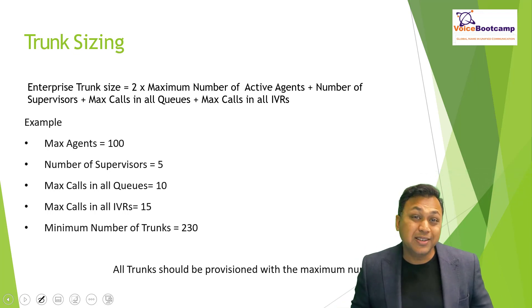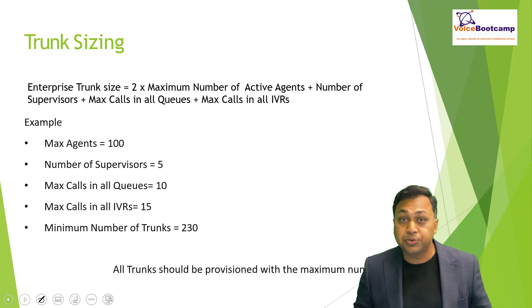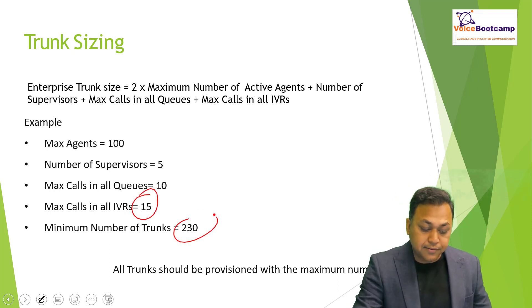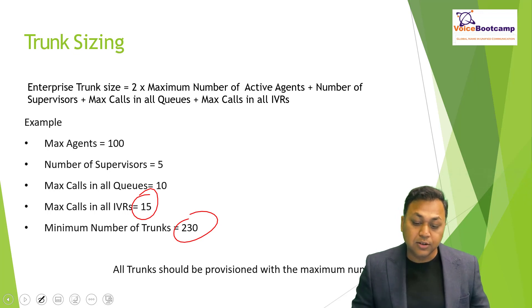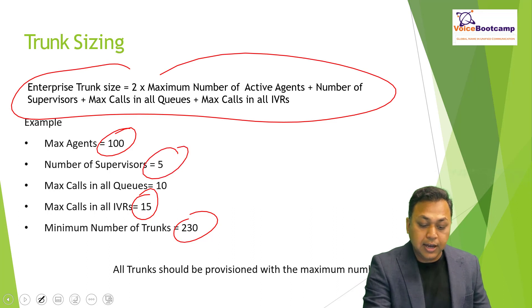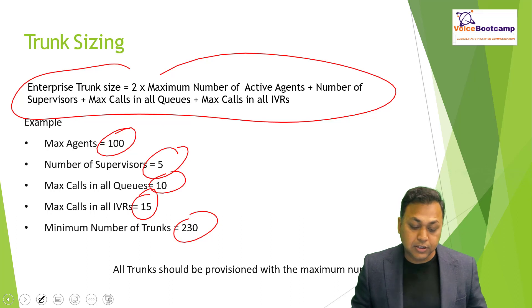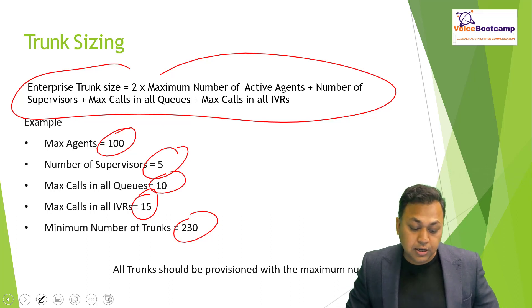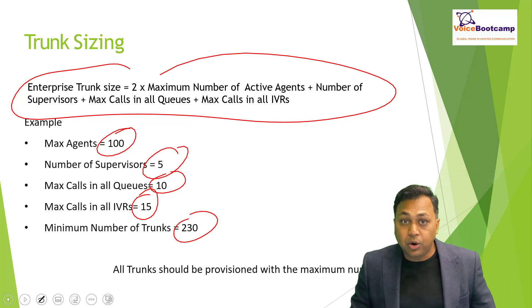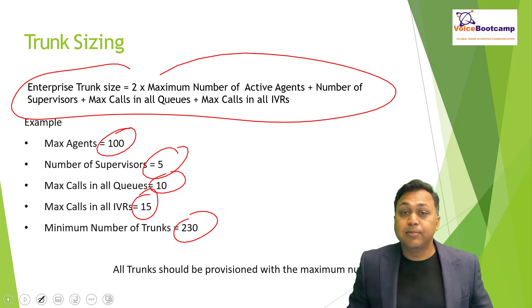You also have IVR — how many calls are going to be in the IVR? Having too many calls sitting in an IVR can also be a resource-draining task. So you take the number of calls in IVR as well. The minimum number of trunks you need is based on this formula: 200 (agents × 2) plus 10 (supervisors × 2) plus 10 (queue) plus 15 (IVR) gives you approximately 230 calls on a trunk. All trunks should be provisioned with that maximum number of calls.